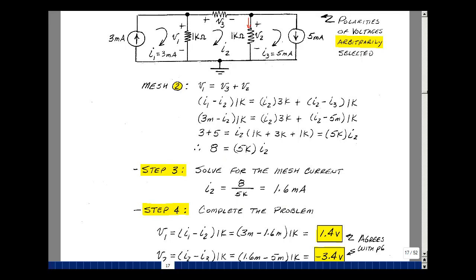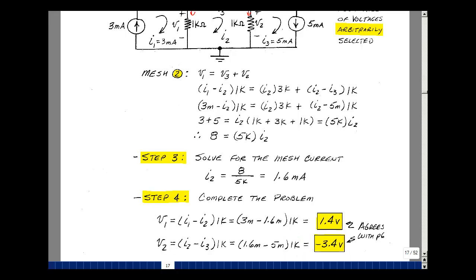And lastly, to find the node voltage V1, the current in this direction would be 3 milliamps minus the current I2, which is 1.6 milliamps times the resistance of 1k is 1.4 volts. The voltage V2 in this direction is going to be I2 minus I3 times 1k. 1.6 milliamps minus 5 milliamps times 1k is 3.4 volts. These are the same results we had on page 6 when we did the node voltage method.